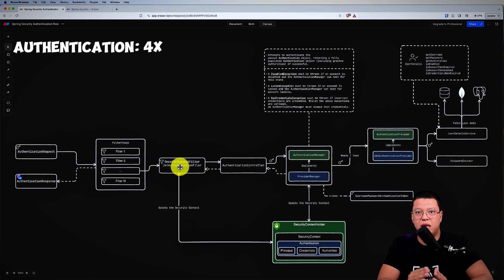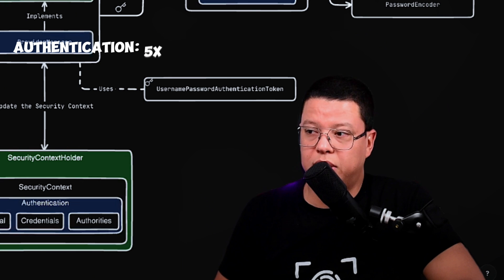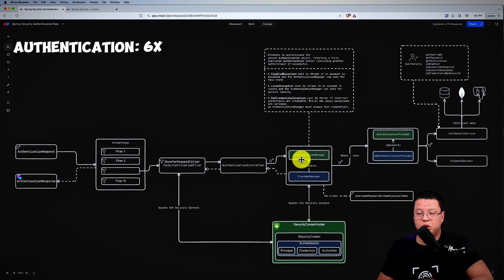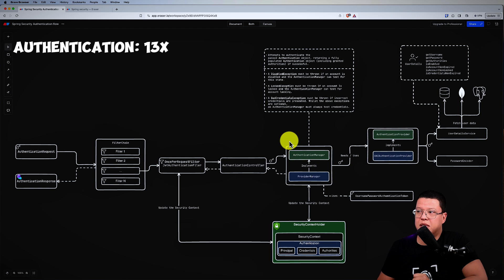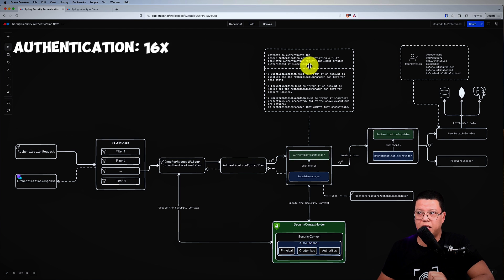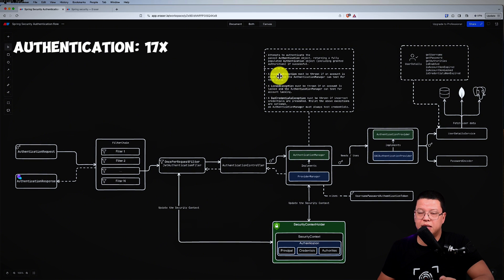The authentication controller has a dependency: the AuthenticationManager. We inject the AuthenticationManager — actually it ends up in the authentication service — and it attempts to authenticate the passed authentication object, returning a fully populated authentication object including granted authorities if successful. If something goes wrong, one of three exceptions will be thrown: a DisabledException, a LockedException, or a BadCredentialsException. These are the three exceptions you need to handle for authentication failures.